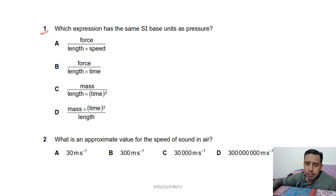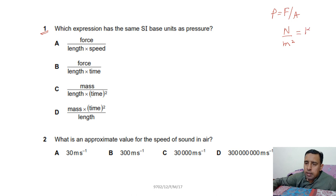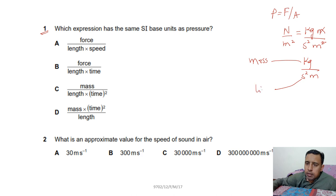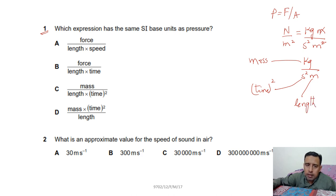Question 1 asks which expression has the same SI base unit as pressure. From the basic formula for pressure — F over A — the unit is newton per metre squared. Newton is kg·m/s², so dividing by m² gives kg/(s²·m), meaning mass over time-squared times length. Option C is correct.